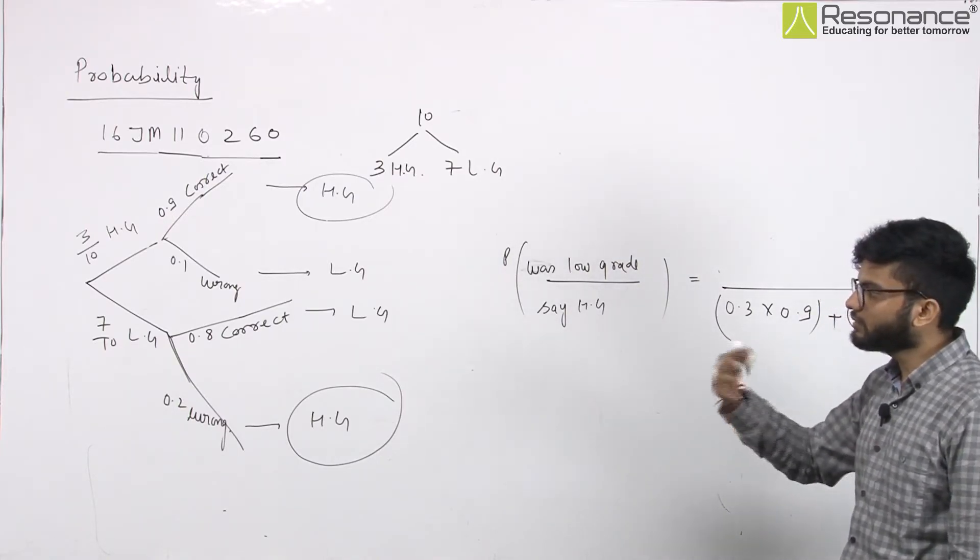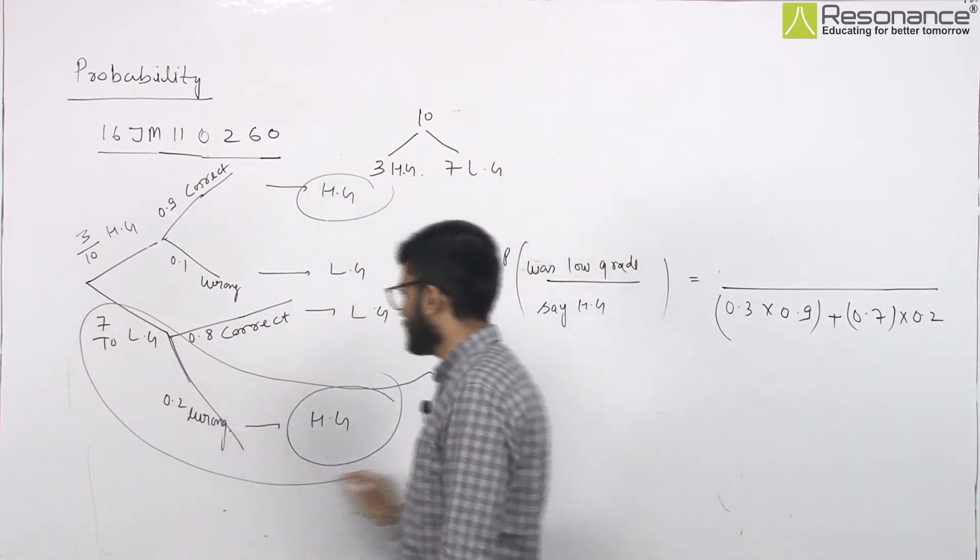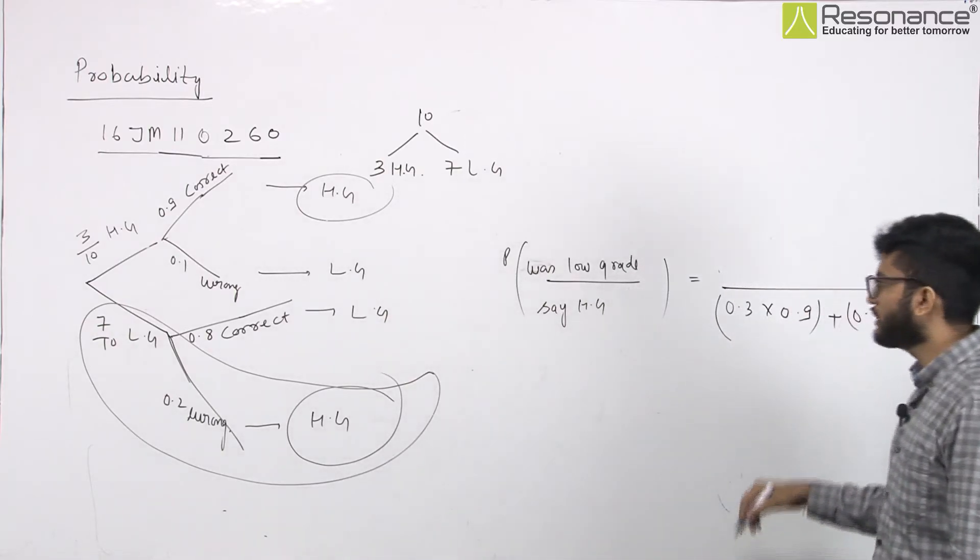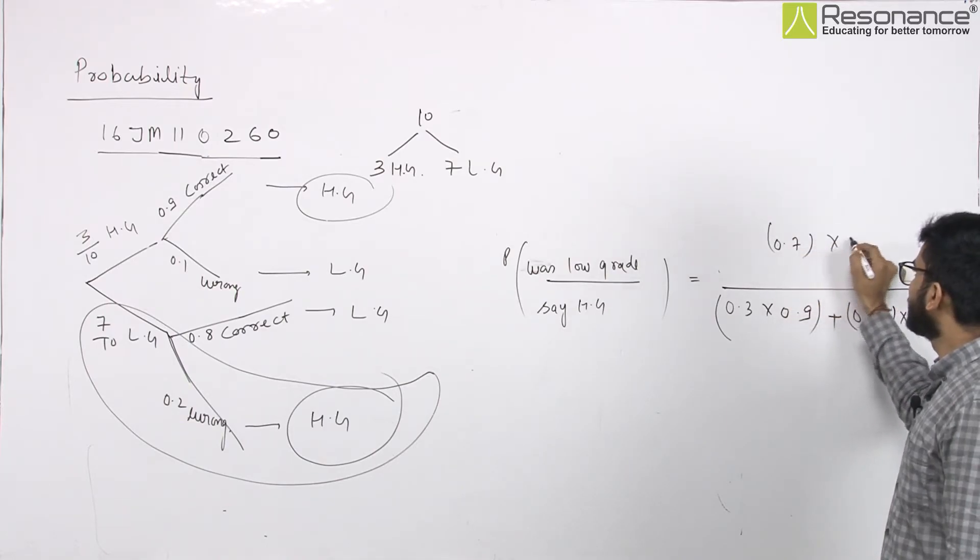Now, they asked if it was low grade. So, if it was low grade, we can say this. This will be a favorable case. So, let's talk about 0.7 into 0.2.